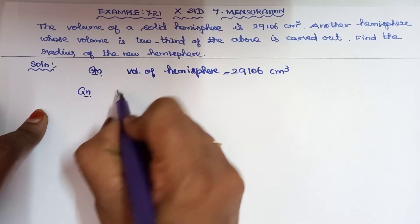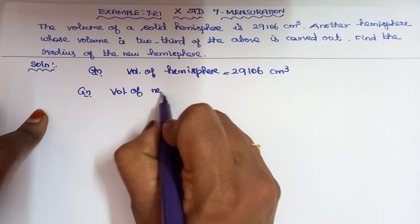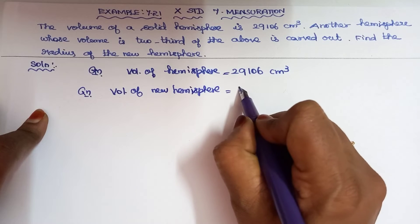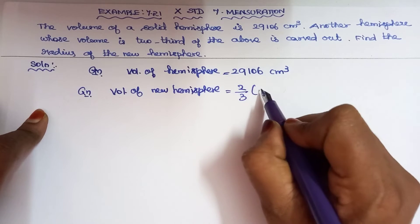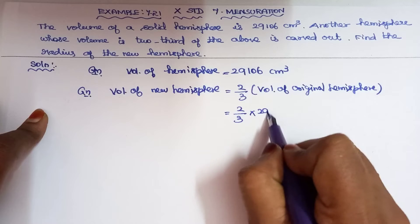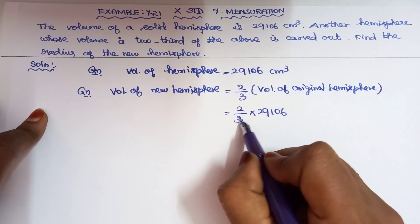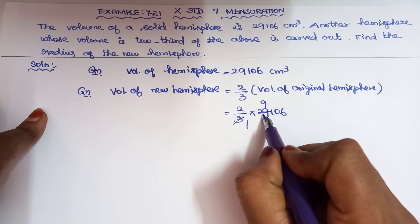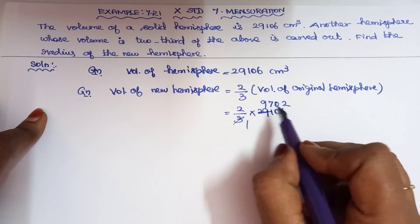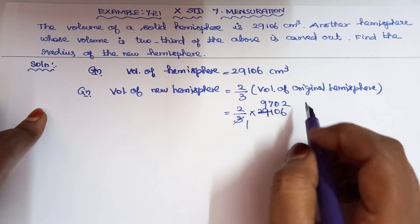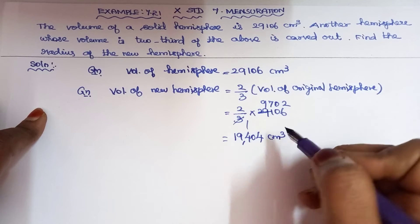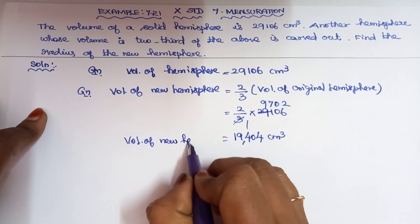Volume of new hemisphere equals two-thirds of volume of original hemisphere: 2 by 3 into 29106. Cancel 3 — 3 nines are 27, balance 2; 21, 3 sevens are 21, 0; 3 twos are 6. So the volume of the new hemisphere is 19404 centimeter cube.